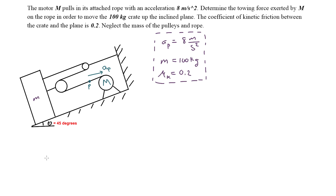In this problem we're told that the motor M pulls in an attached rope with an acceleration of 8 meters per second squared. Determine the towing force exerted by the motor on the rope in order to move the 100 kilogram crate up the inclined plane. The coefficient of kinetic friction between the crate and the plane is 0.2. Neglect the mass of the pulleys and the rope.